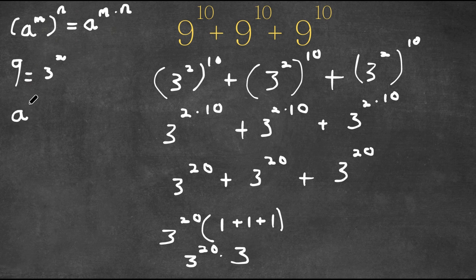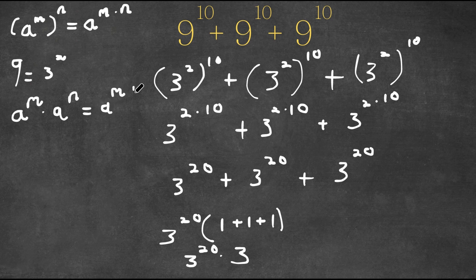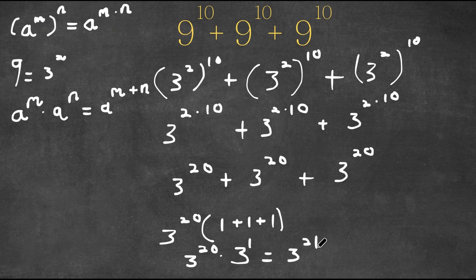And if we have a to the power of m times a to the power of n, this is going to be a to the power of m plus n. So 3 to the power of 20 times 3 — well, 3 is the same thing as 3 to the power of 1. So this would be 3 to the power of 20 plus 1, which is 3 to the power of 21. So this is our answer.